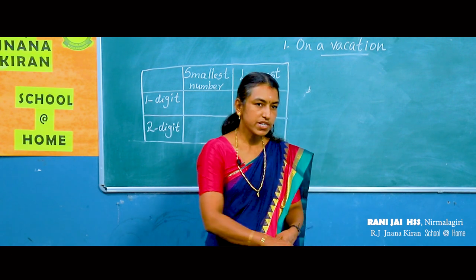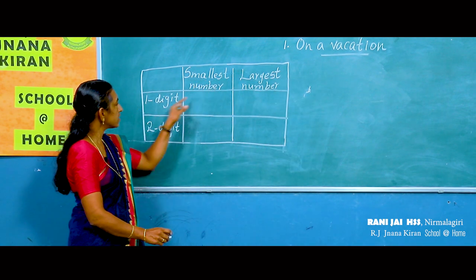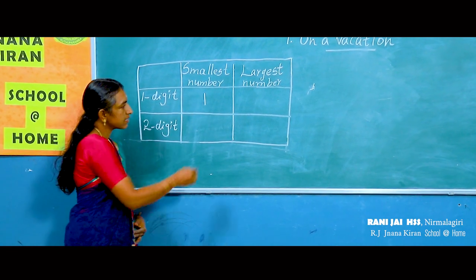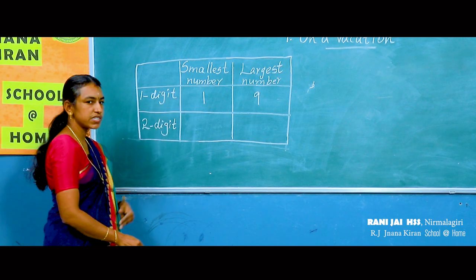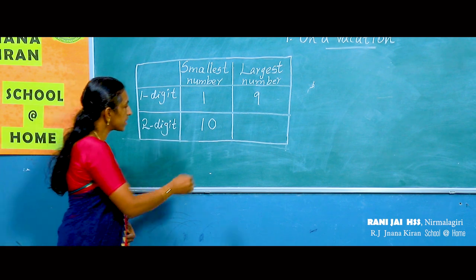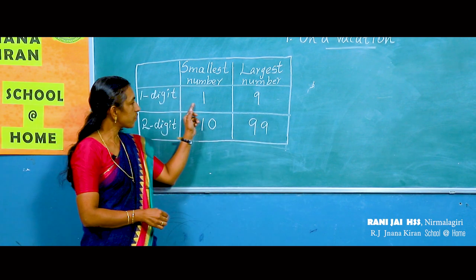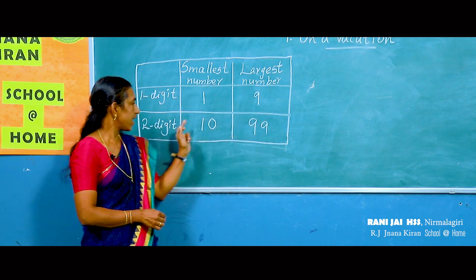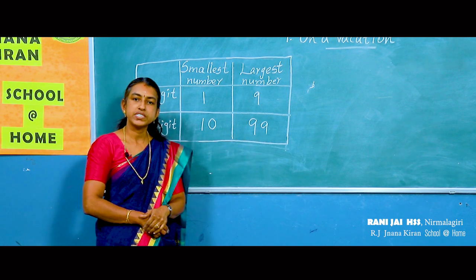All of you look at the board. The smallest one-digit number is one, and the largest one-digit number is nine. The smallest two-digit number is ten, and the largest two-digit number is ninety-nine. So the digits from one to nine are one-digit numbers, and the digits from 10 to 99 are two-digit numbers.